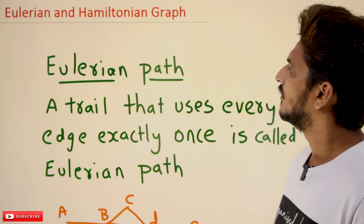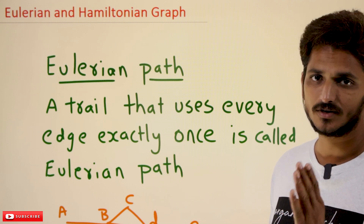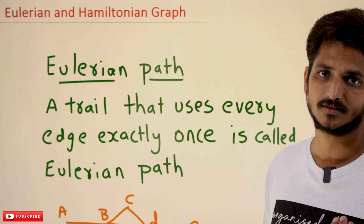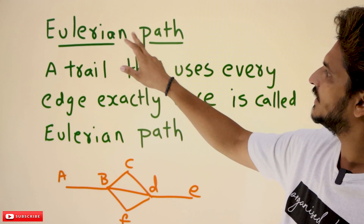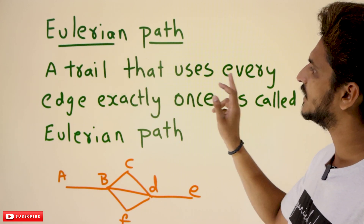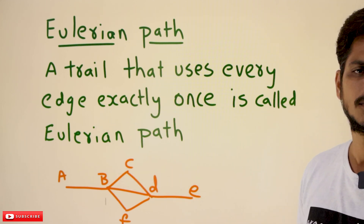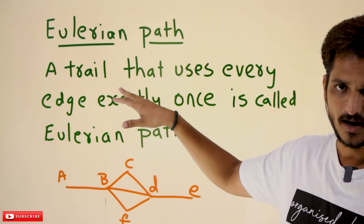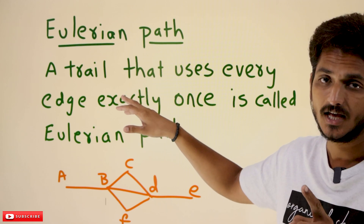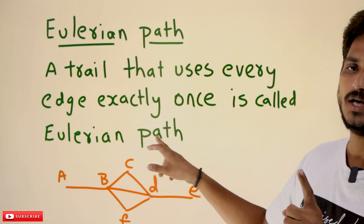Coming to today's class, first we need to understand what is meant by Eulerian path. The basics about trail, path, and circuit were discussed in our previous classes. A trail that uses every edge exactly once is called an Eulerian path. Means you want to walk on a graph that covers every edge exactly once.